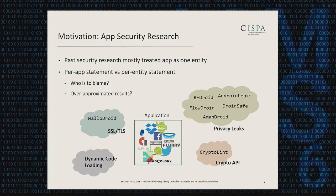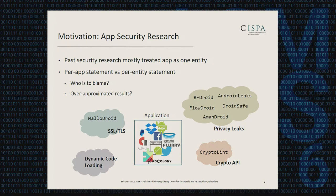Prior research has also shown that third-party libraries are a contributing factor to such security issues. So the question of who is to blame if such a security vulnerability is found mostly remained unanswered. Results such as 'this app includes ten privacy leaks' are certainly useful, but they would be even more useful if they could tell us those leaks all come from a single library or subset of libraries.